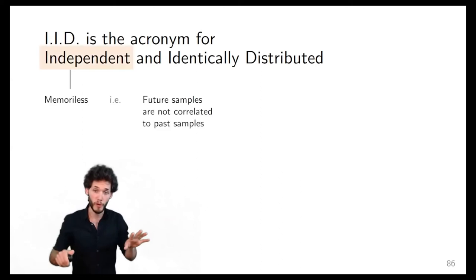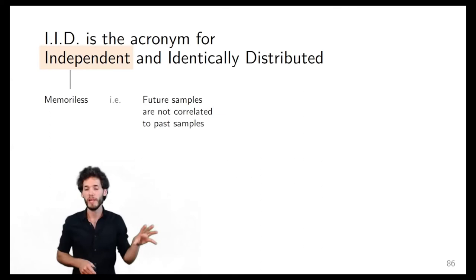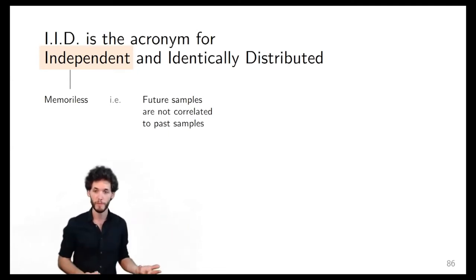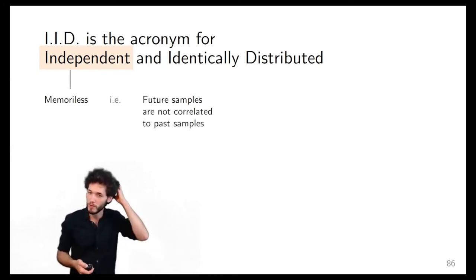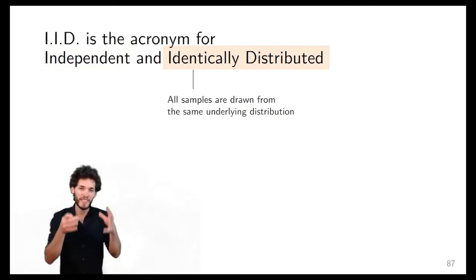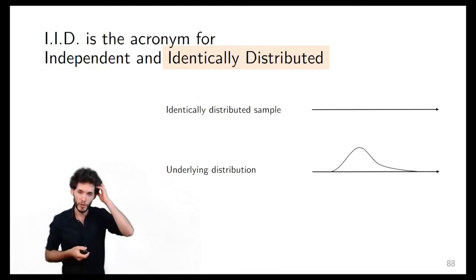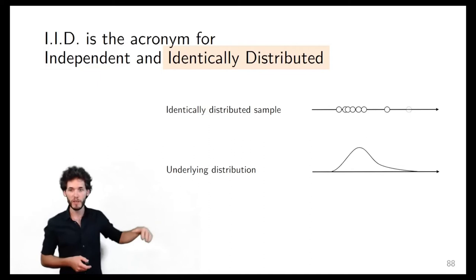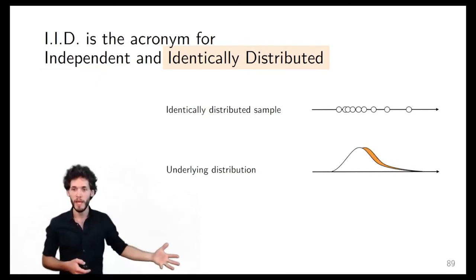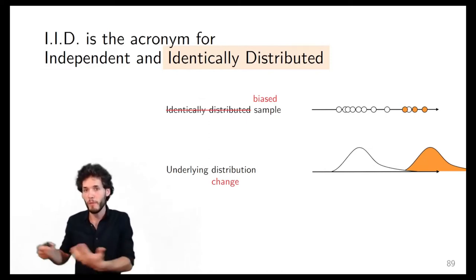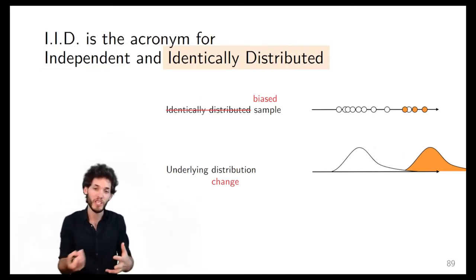Let's break IID into two parts. Independent means 'memoryless' — multiple samples are not correlated with one another. One does not allow you to predict what the others will be; they have no relationship whatsoever. That's also why it's called memoryless — no impact from what happened before. Identically distributed means that all samples come from the same underlying distribution. If you take samples from a distribution, they are identically distributed. But if that distribution shifts over time and you keep sampling, then the samples become biased — they come not from one distribution but from a distribution that changed over time.